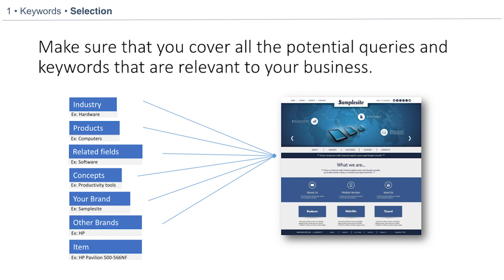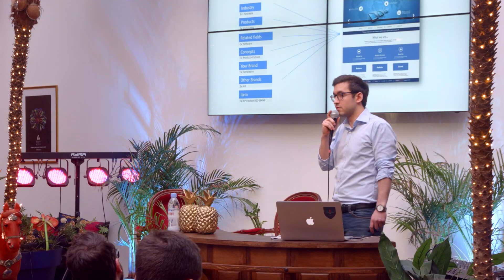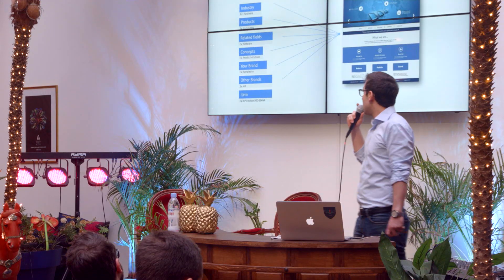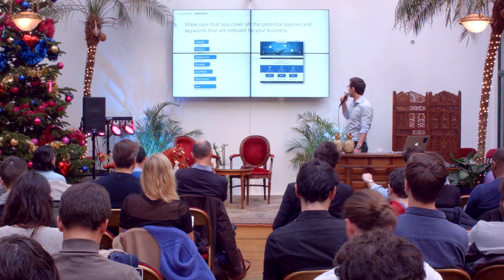You will also have keywords relating to your products and other concepts. For example, for a retailer at Christmas, it could be like 'I'm looking for a Christmas gift for my dad.' If you're selling something that could be of interest to that user, you could buy these keywords. It could also be the brand of other people if you're selling other brands on your website, or specific items — I put an HP desktop model as an example.